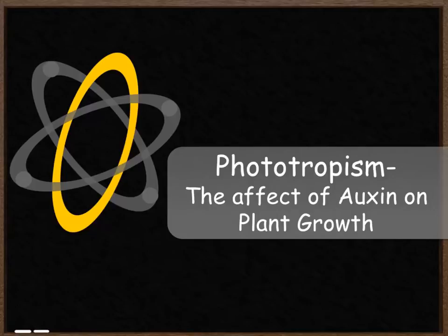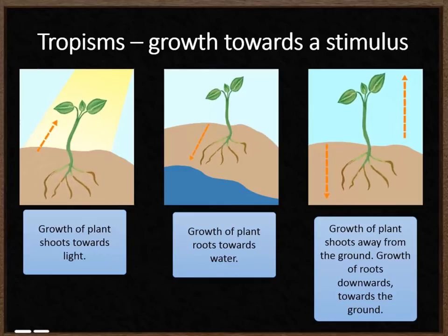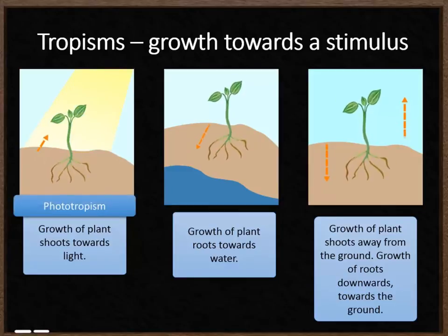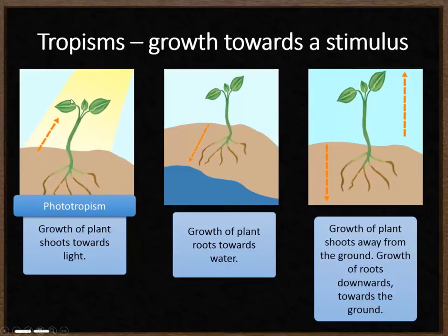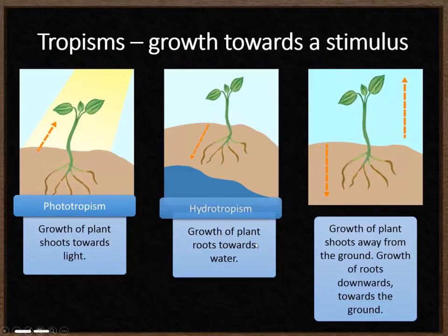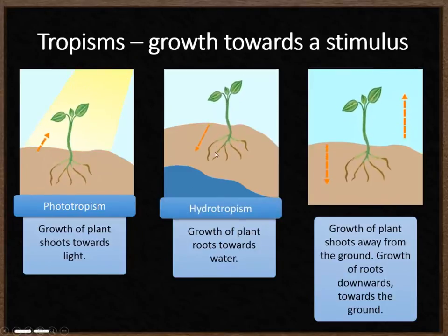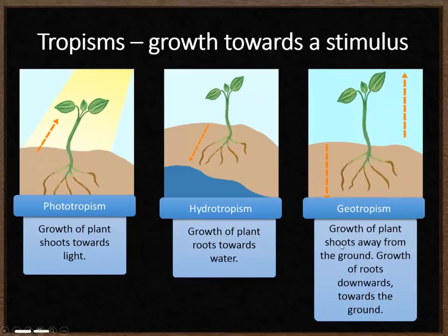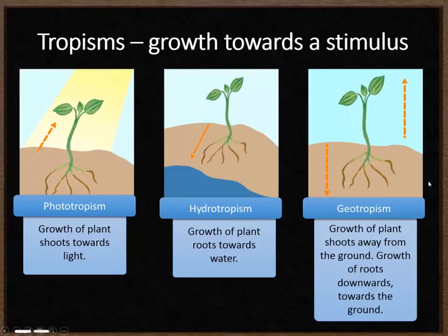Phototropism and the effect of auxin on plant growth. A tropism is a growth towards a stimulus, and there are three tropisms we can look at to do with plants. The first is phototropism — the growth of a plant towards light, where the shoots grow towards the source of light. The second is hydrotropism — the growth of roots towards a source of water. The last is geotropism — the growth of plant shoots away from the ground upwards, and the growth of roots downwards towards the ground.